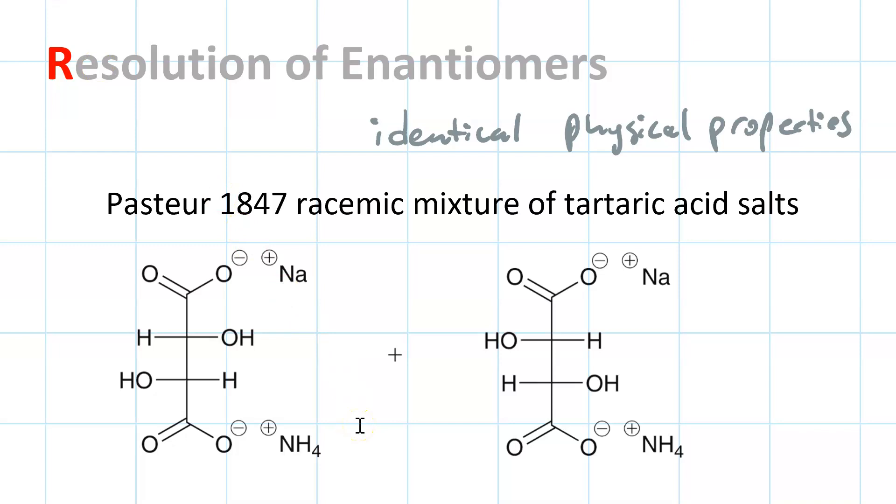Pasteur was working on wine in 1847 and he found two different shaped crystals of sodium ammonium tartrate from a racemic mixture. He was able to recrystallize this and then take a magnifying glass and separate right-handed crystals from left-handed crystals.